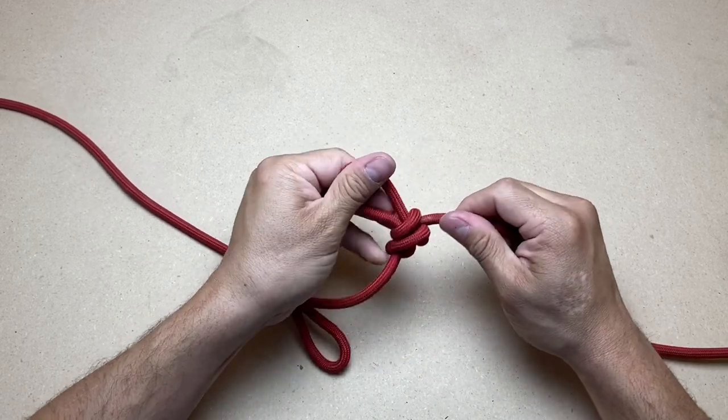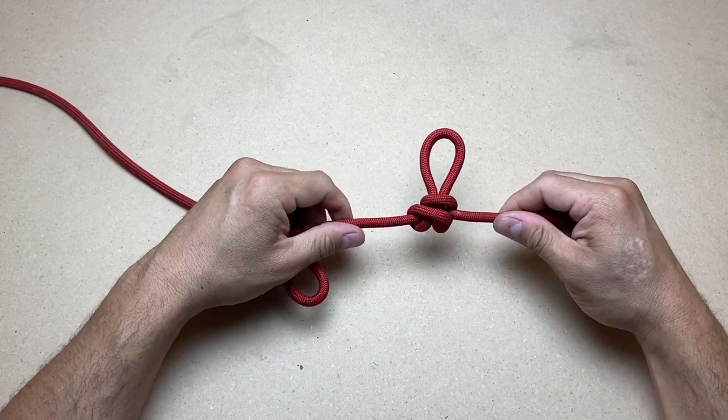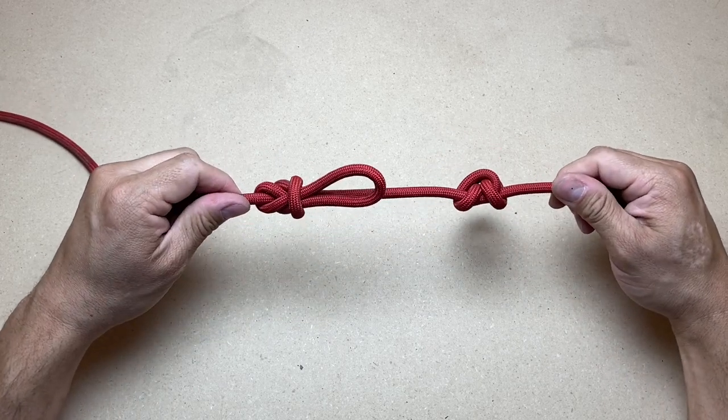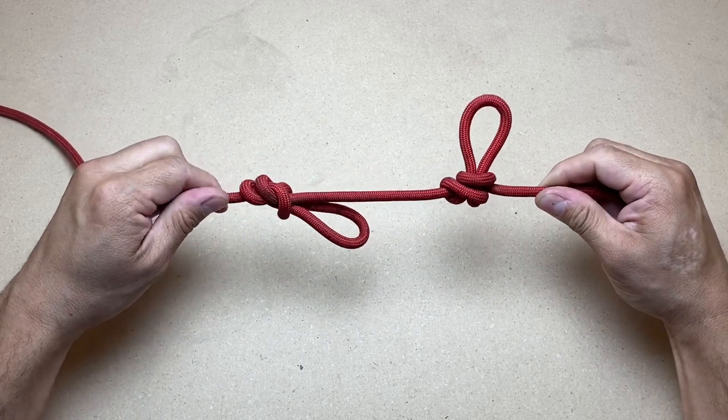And now your loop is perfectly 90 degrees to your rope. There you go. 90 degrees, 180 degrees.